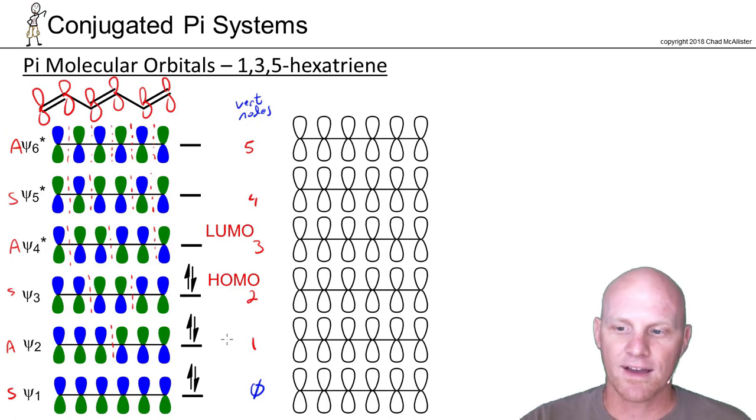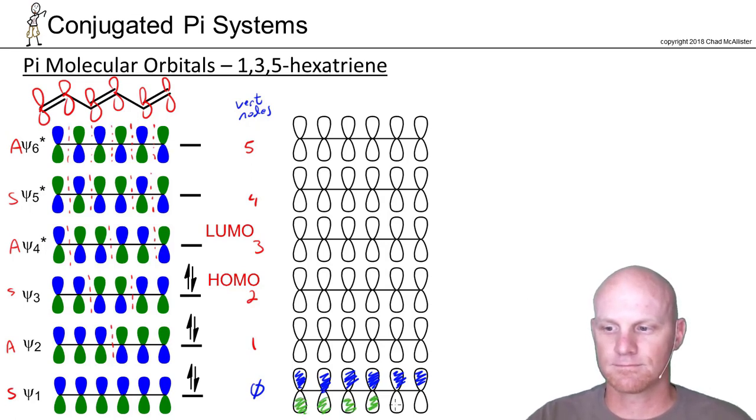So we're going to go back and start with the lowest energy molecular orbital. And as you recall, in the lowest one, that's always easy to draw because your wave functions match. They're in phase all the way across. So then your highest energy one, psi 6 in this case, is equally easy to draw because they just alternate all the way across.